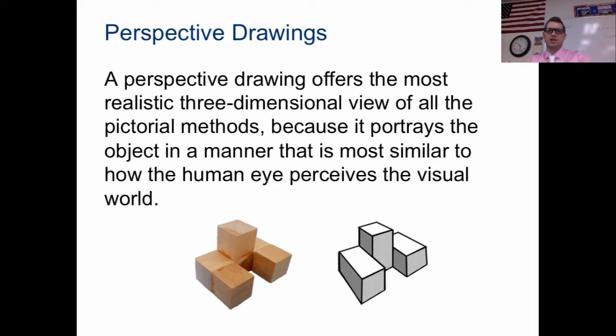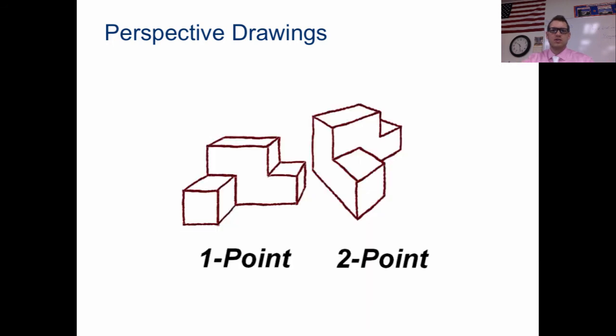You think one part of the painting is closer to you. It looks like someone is further back. So this is realistic to your human eyes. There are two different ways of making a perspective drawing. One is having one point. The other is having multiple points.